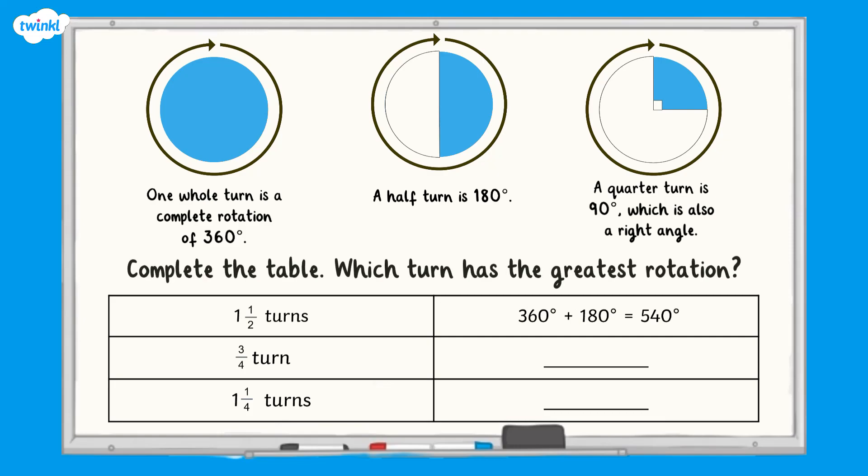Now it's your turn. Can you calculate the amount of degrees in three quarters of a turn, and one and a quarter turns? Which of the three turns has the greatest rotation? Pause the video whilst you work out your answer. All complete? Well done. Let's have a look at the answers.